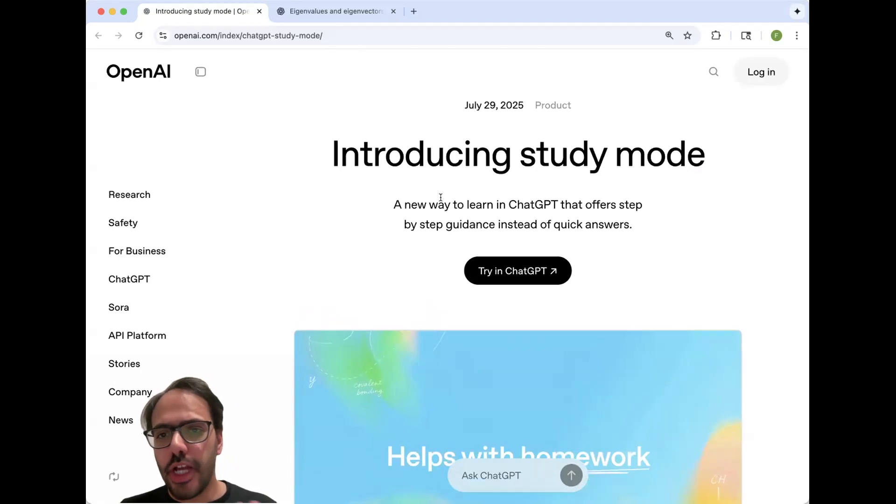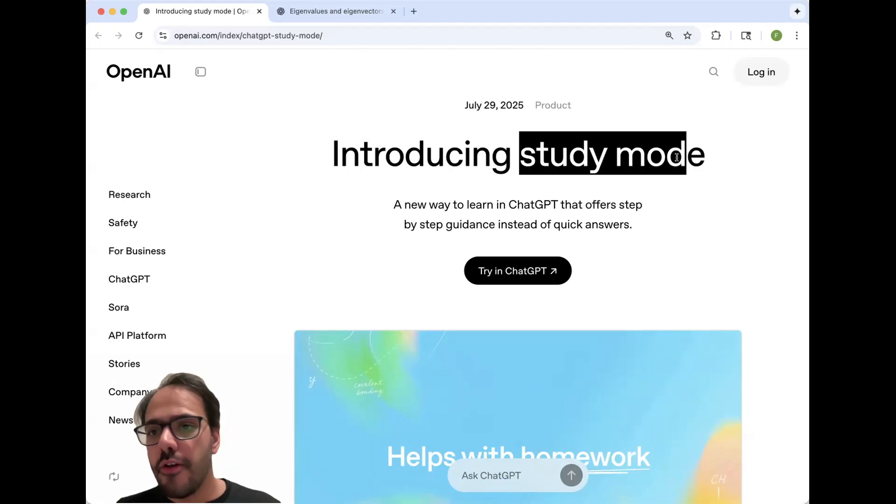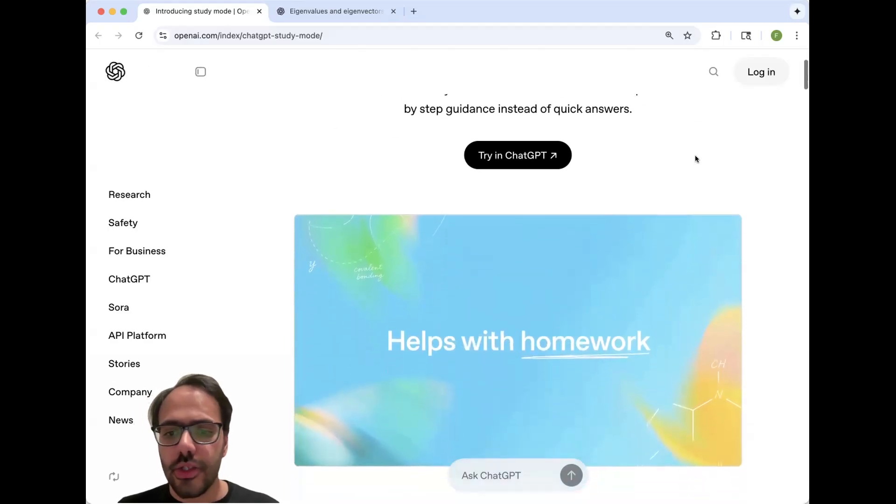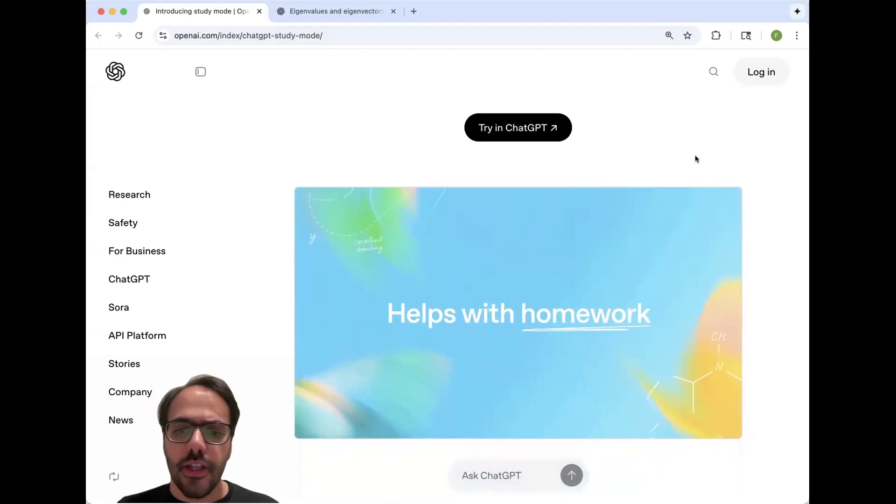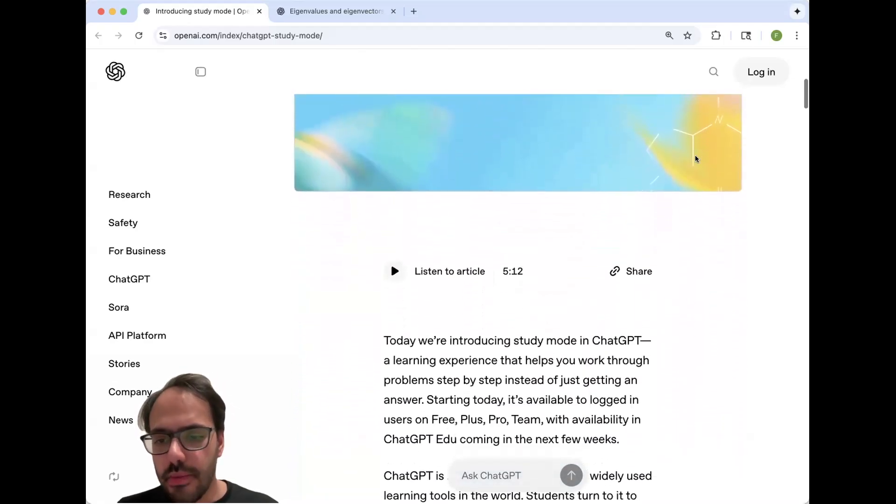Hello everyone! On July 29, OpenAI released a study mode for ChatGPT which in my opinion is a game-changer for college students. So what is this study mode for? It's for college students that need help with their lecture notes and their assignments.